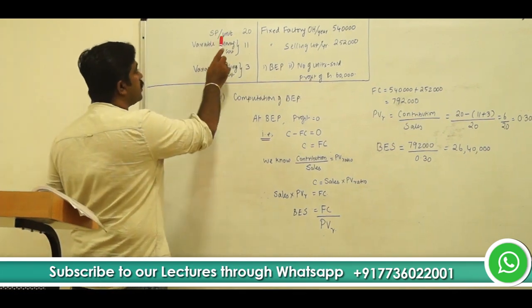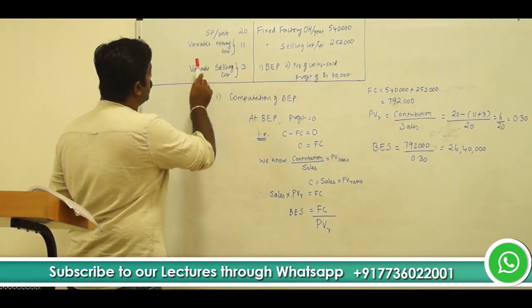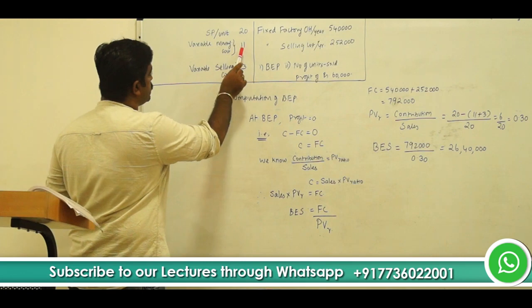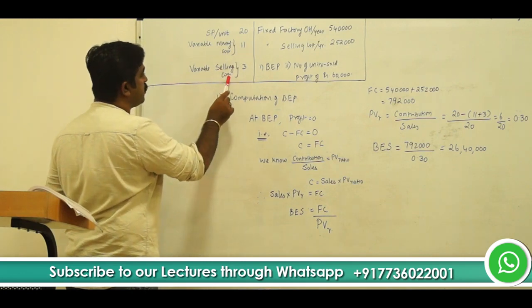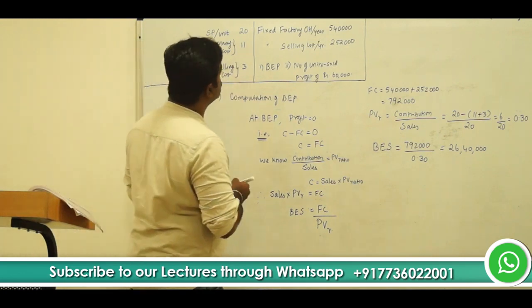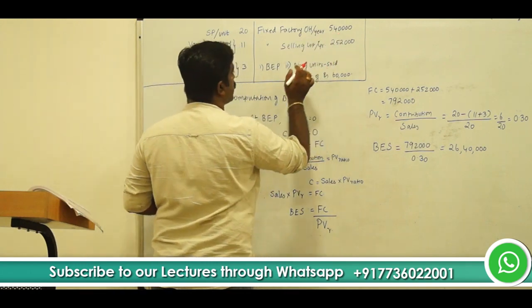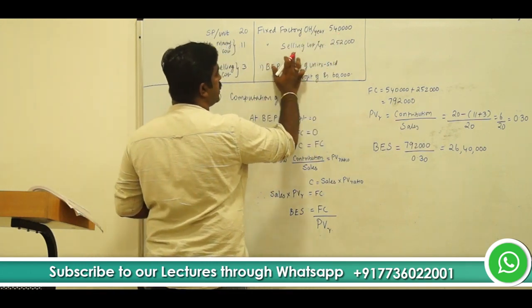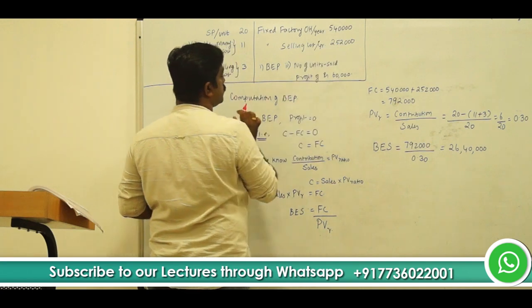Selling price per unit is Rs. 20. Variable manufacturing cost per unit is Rs. 11. Variable selling cost per unit is Rs. 3. Fixed factory overhead per year is Rs. 5,40,000. Fixed selling cost per year is Rs. 2,52,000.